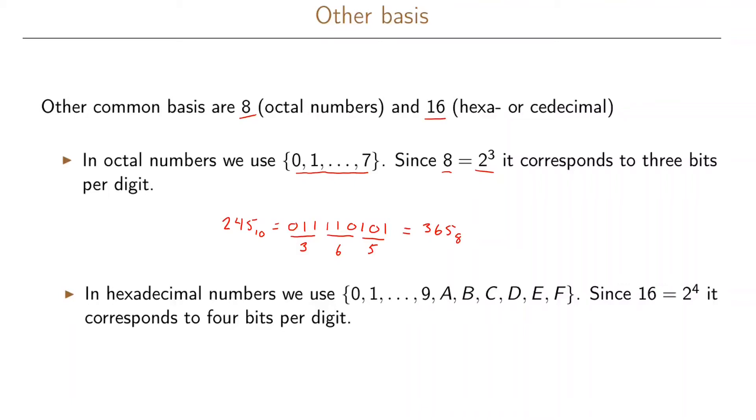And we have a similar situation for the hexadecimal numbers but here we need 16 different symbols in order to represent our numbers. The first 10 we just take the normal digits that we have 0 to 9 and then for the last six symbols we typically use A, B, C, D, E and F which are the first six letters in the alphabet.